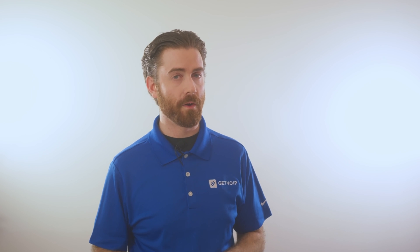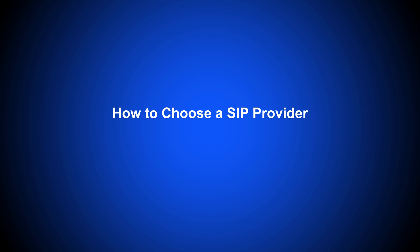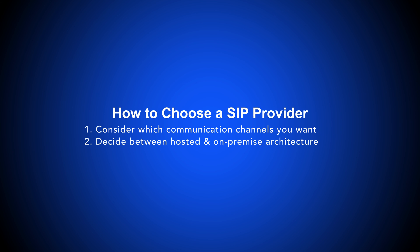To choose the best SIP provider and software for your company, use the following three steps. First, consider which communication channels you want. Second, decide between hosted and on-premise architecture. And third, compare software features and pricing.